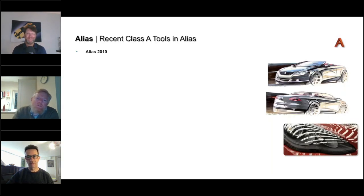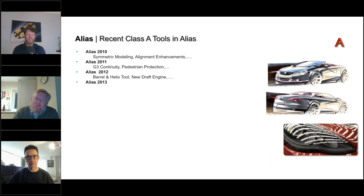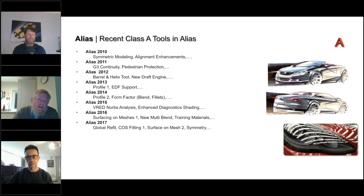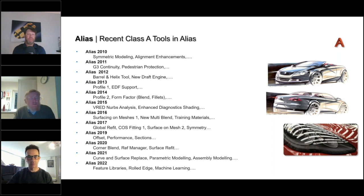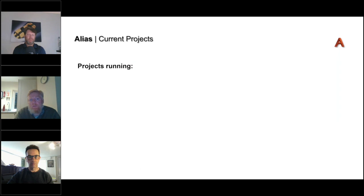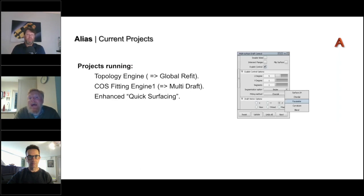Just a quick couple of minutes on some of the tools we have in Alias. For a long time we've been enhancing the Class A tools in Alias — for the past 10, 11, 12 releases — with enhancements such as EDF file IO, curve on surface, offset performance enhancements, reference manager, and in the latest release aspects of assembly modelling. We've also introduced tools such as panel gap, ball corner enhancements, helix and barrel tools, and updates to profile tools — the bread-and-butter tools we need to build our surfaces.